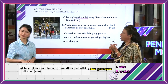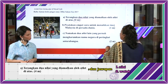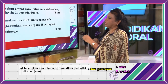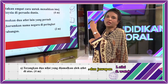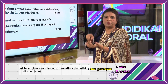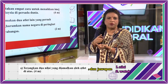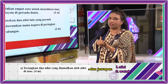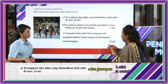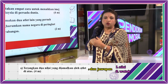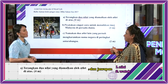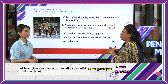Ayat kedua mesti mula dengan watak. Watak dalam soalan ini ialah atlet. Atlet perlu berlatih bersungguh-sungguh — watak, apa yang mereka buat (action) dan apa sebab mereka bertindak demikian. Ayat kedua: atlet berlatih bersungguh-sungguh untuk mencapai kejayaan demi negara. Kemudian nilai yang kedua.